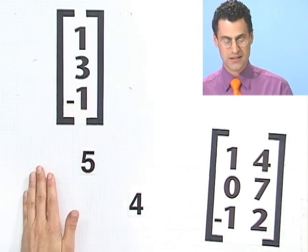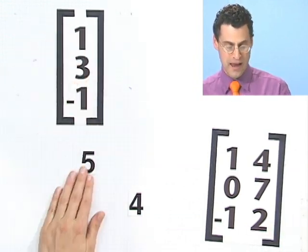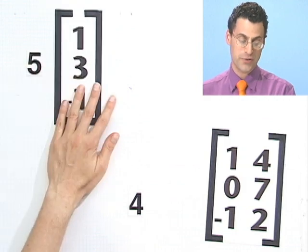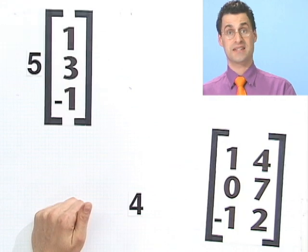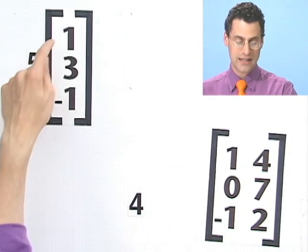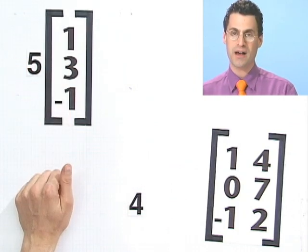For example, if I take this matrix, which is a 3 by 1, and multiply it by 5, what do you think I would end up getting? Well, I'd get another 3 by 1 matrix, and you'll never guess the answer. Yes, that's right. I take each of these elements and multiply it by 5.